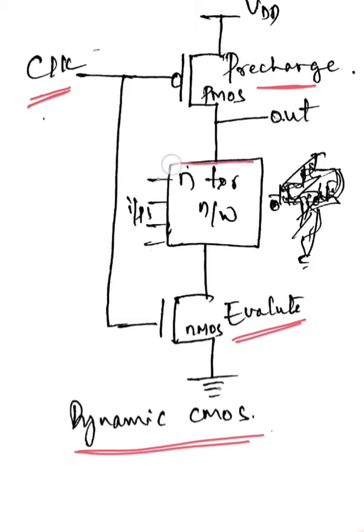The logical circuit we are going to write using N transistor network will be acting as a pull-down network, and we will have a single PMOS transistor called the precharge transistor, and one more N transistor under the N transistor network to evaluate the logic.